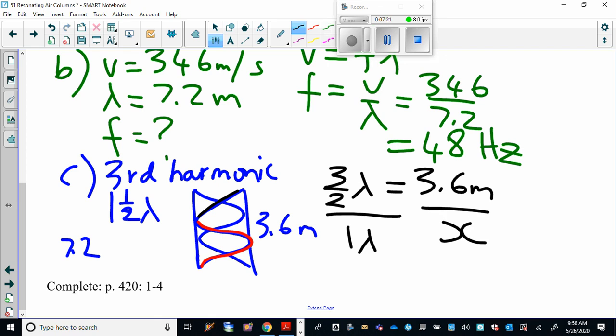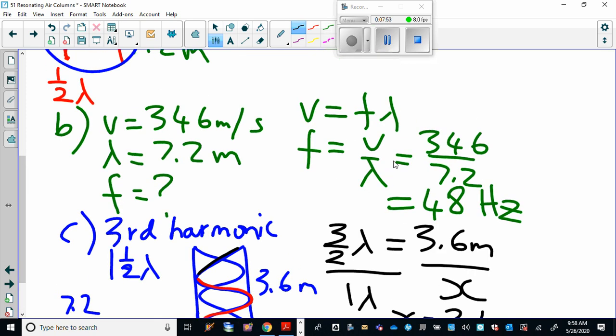So this is the way I would do that question. I would say if one and a half wavelengths fits in a column of 3.6 meters, then how much is one wavelength? And so then you cross, multiply, and divide and you end up getting 2.4. It seems very reasonable. It's more than half the pipe, but not the full pipe. So now one wavelength is now 2.4 meters. And then you can go back up to question B and do the same thing, but we're just going to change the 7.2 to 2.4.